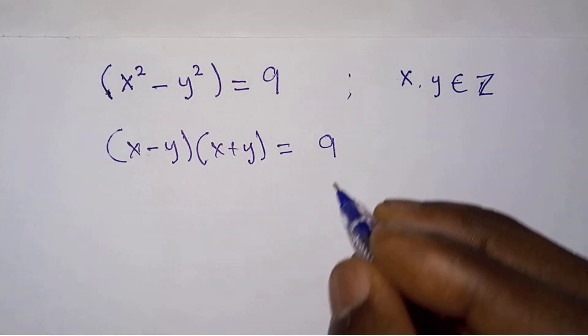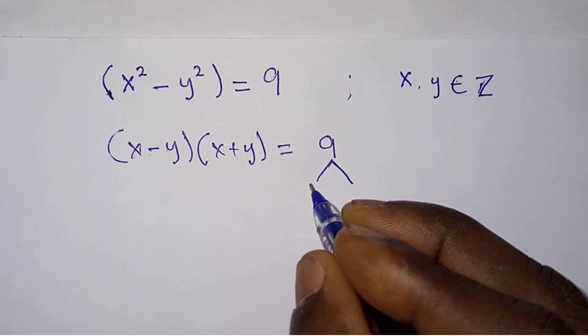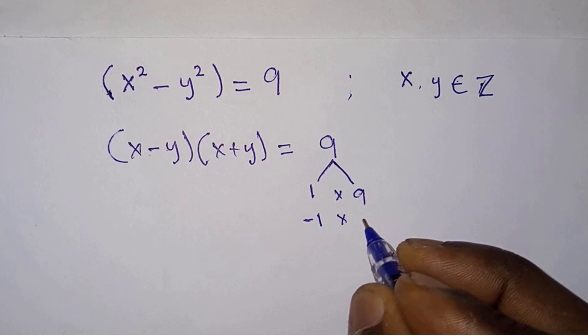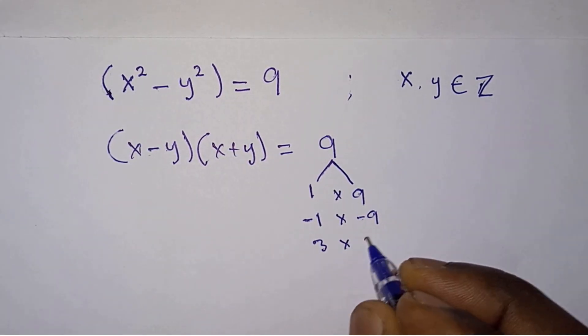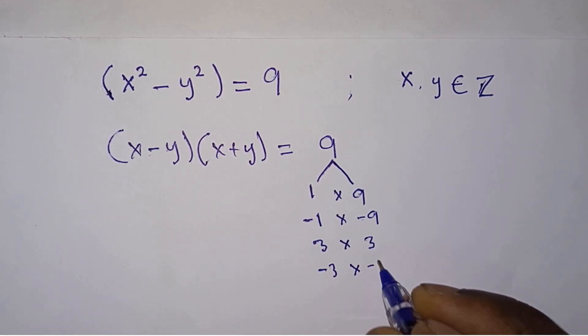So what we will do is find the factors of 9. The factors we can have: 1 times 9, negative 1 times negative 9, 3 times 3, and negative 3 times negative 3.